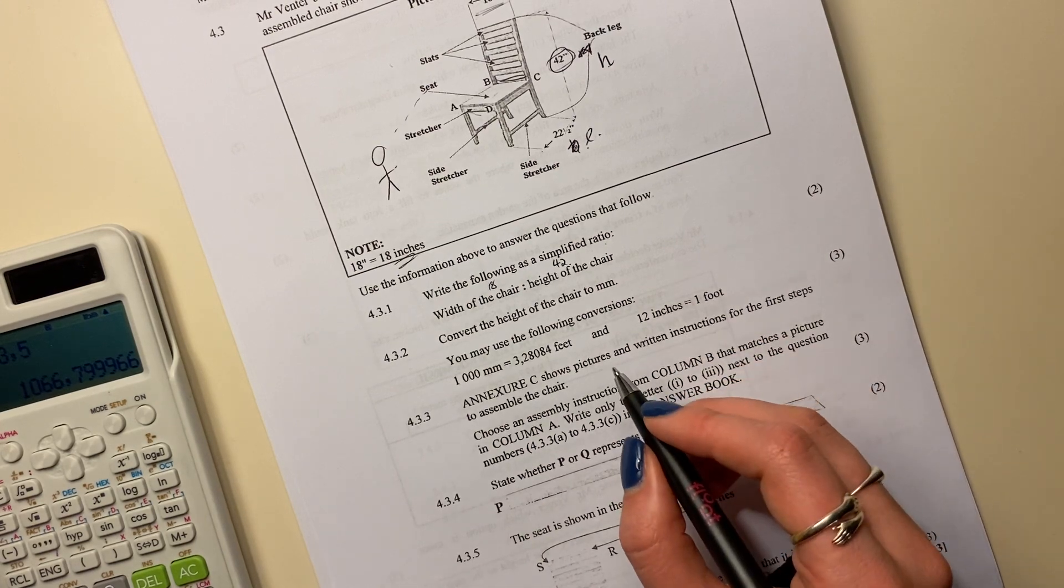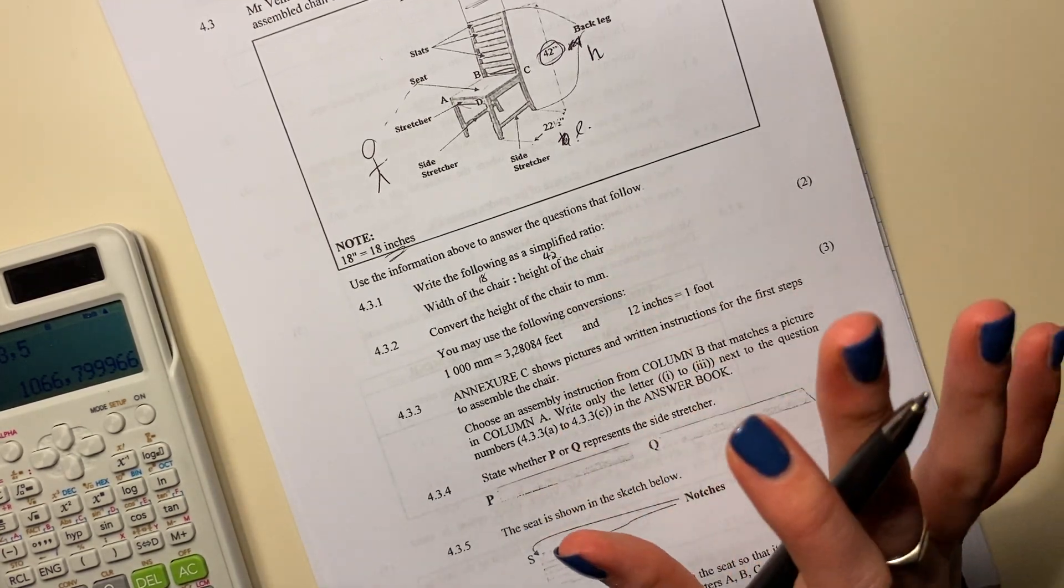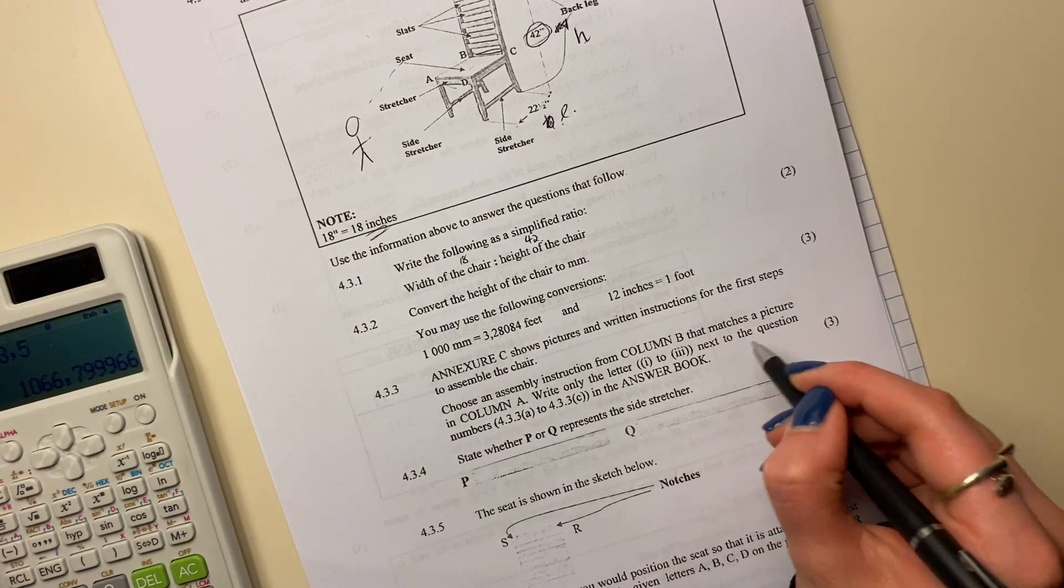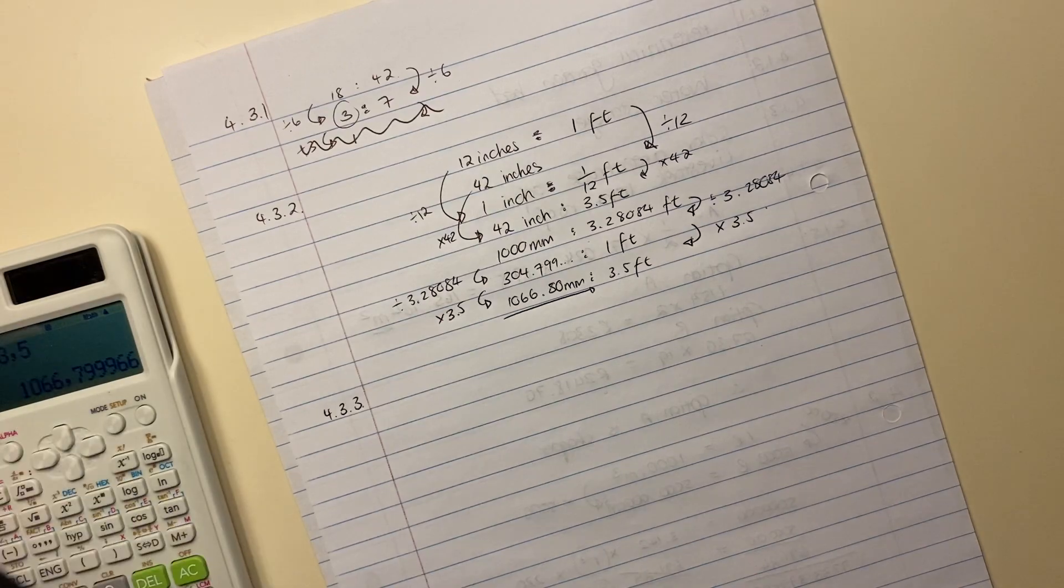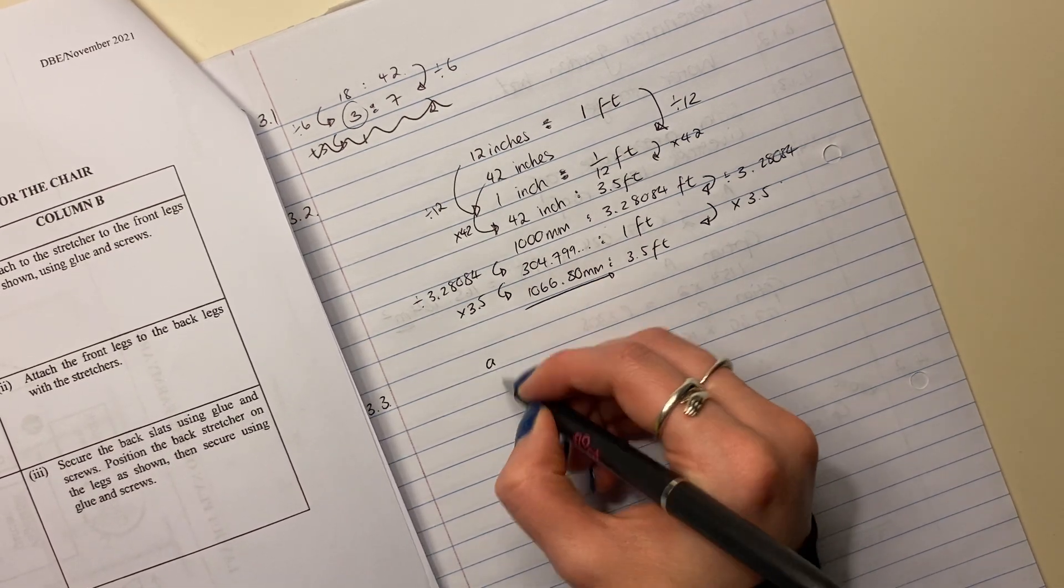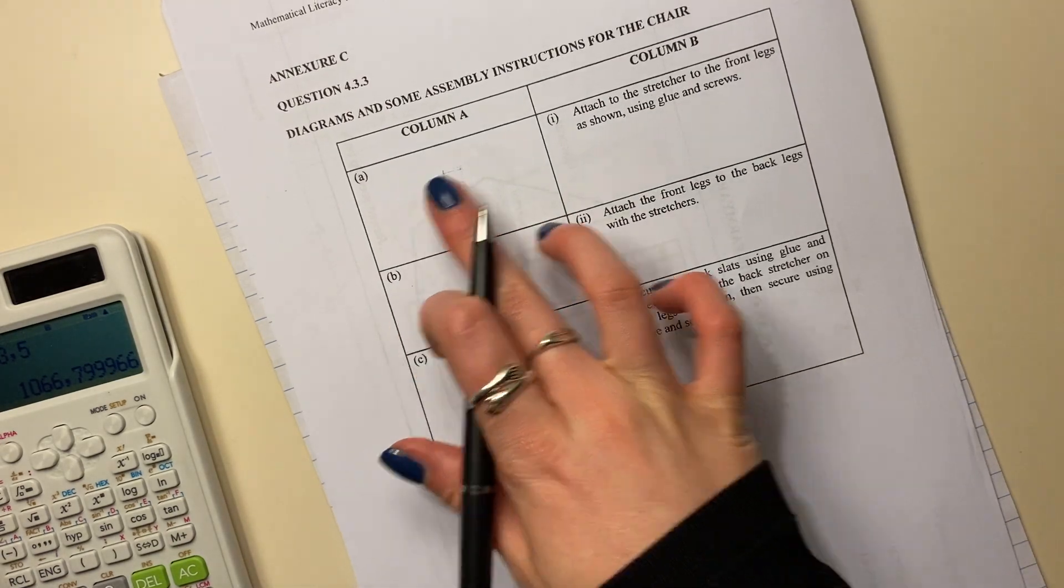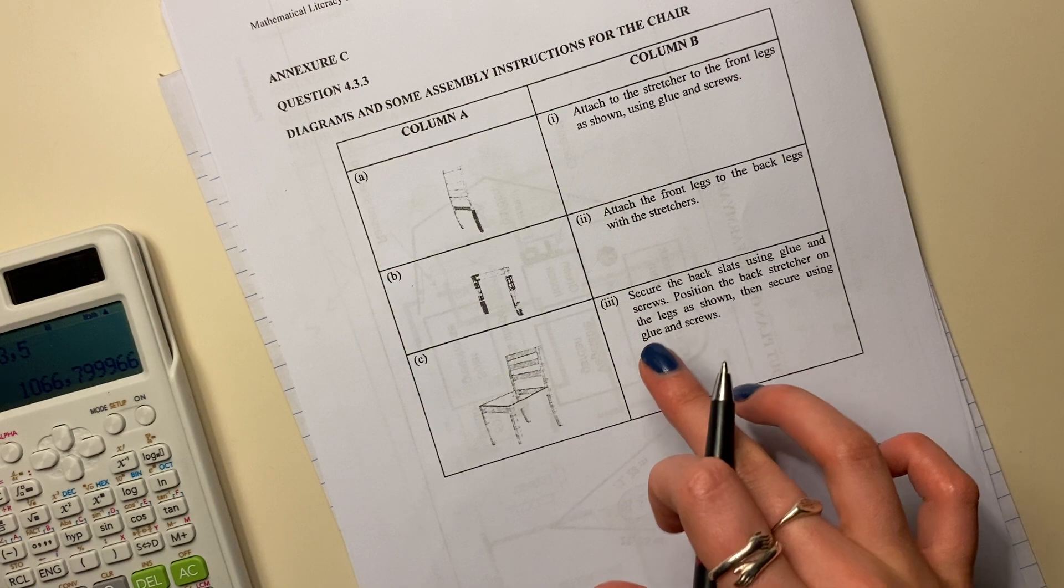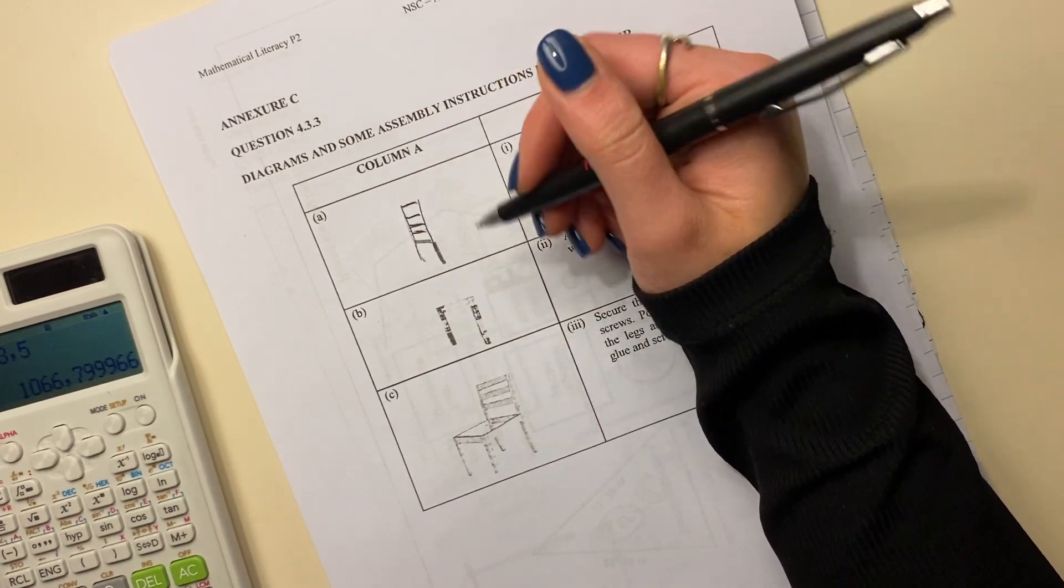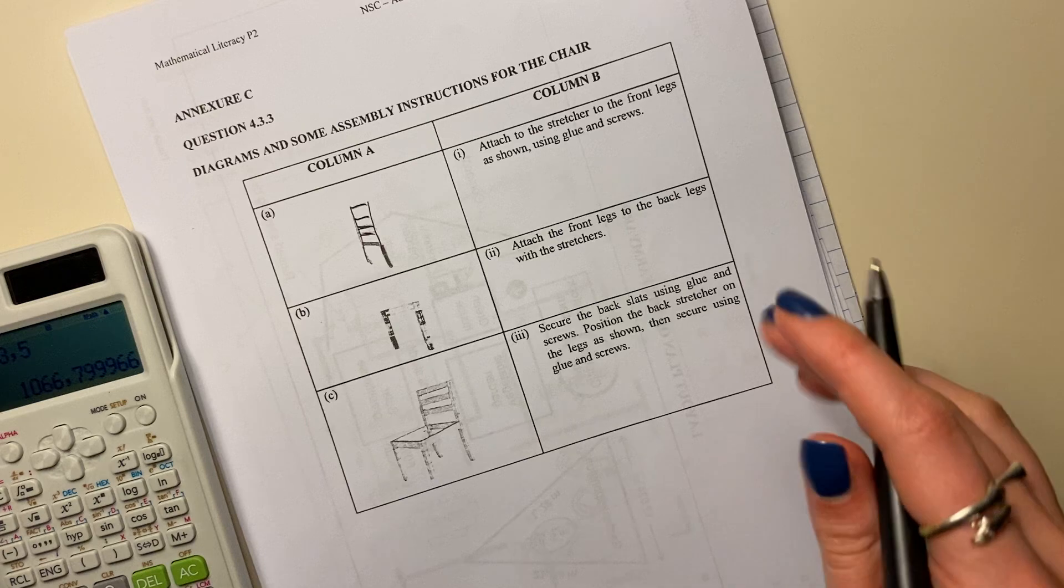Let's continue to the next question. Annexa C shows pictures and written instructions for the first steps to assemble the chair. So go get your Annexa. This is where it like blows my mind. I'm so not practical. Choose an assembly instruction from column B that matches a picture in column A. Write only the letter next to the question. So we're basically going to do this. We're going to have 4.4.3. So we're going to basically say here A, B, and C. And what we're going to do is we're going to match this column to something in that column. So let's make sure we do this correctly. This, my printer again is being extreme, but this is basically the legs, the back of the chair before it gets all assembled together.